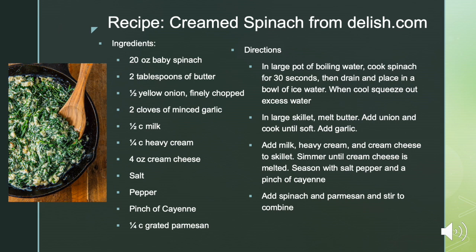The example recipe I found was from delish.com and it's cream spinach. The recipe includes baby spinach, butter, yellow onion, garlic, milk, heavy cream, cream cheese, salt, pepper, cayenne, and grated parmesan. The recipe involves boiling water and cooking the spinach in it for only 30 seconds, then placing it in ice water. Then you melt down the butter and onion with the garlic, add the milk, cream, and cream cheese, and simmer until everything's melted. Then you add the rest of the seasonings and the spinach.